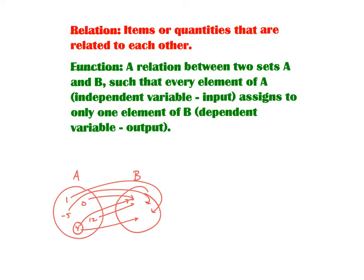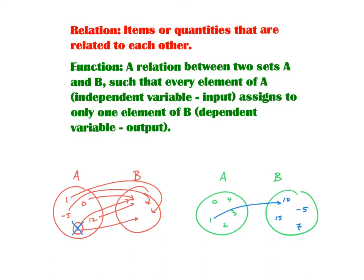But in a function, the input values in A can go to one and only one value in B. So this four right here would be a violation of what we consider a function to be. The definition of a function is a relation between two sets A and B such that every element of A — the input or independent variable — assigns to only one element of B, the dependent variable or output. Both three and four can go to negative five, can produce an output of negative five. But no one input can have two separate outputs. That's a violation of what's called a function.